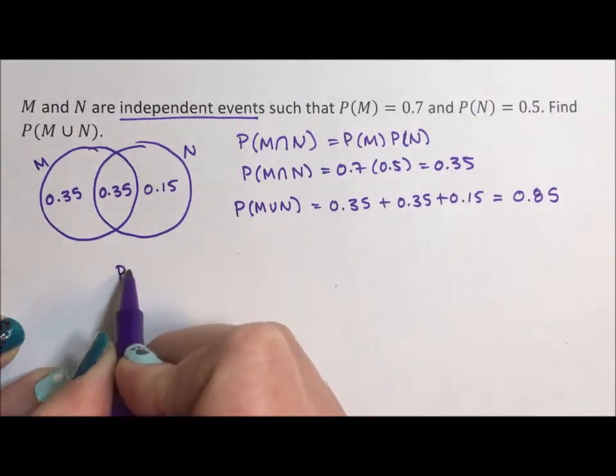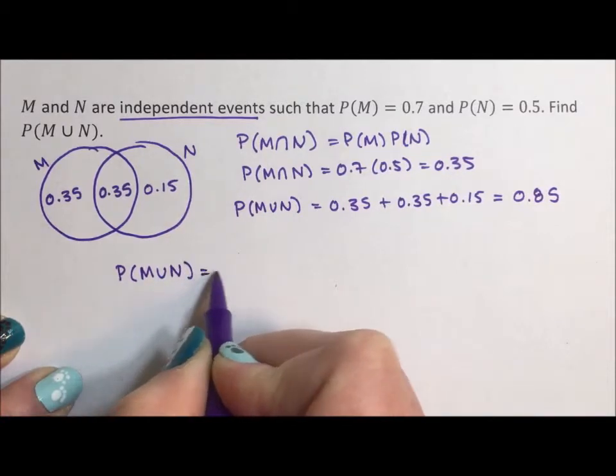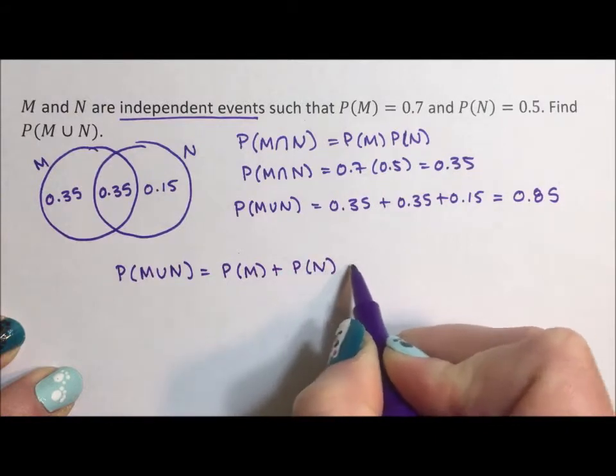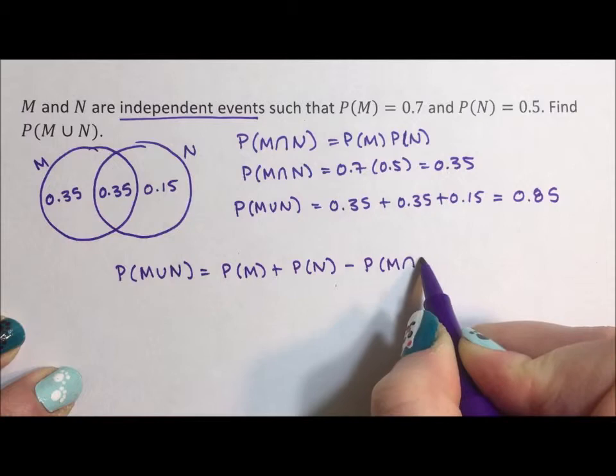The formula says that the union is equal to the probability of M plus the probability of N minus the probability of M intersection N.